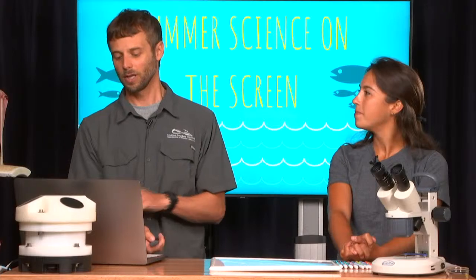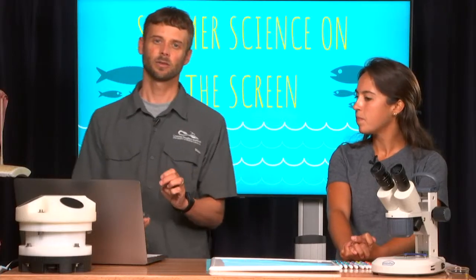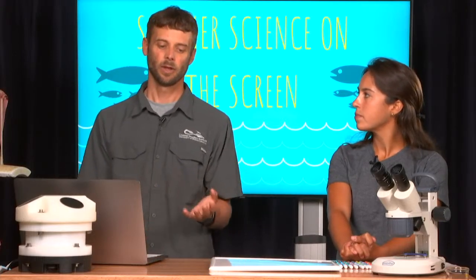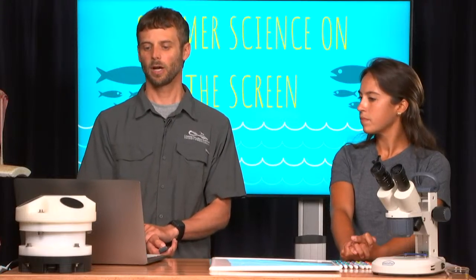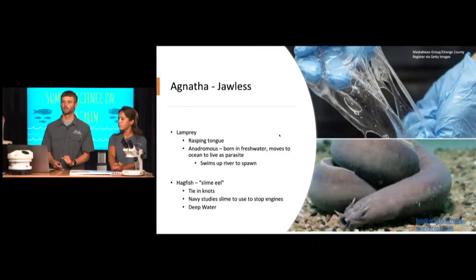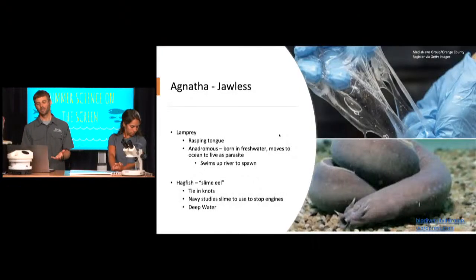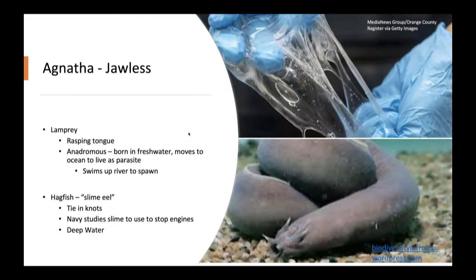Now we're going to focus on three classes of fish. The first class is called Agnatha — the jawless fish. We don't see them very frequently here, so we'll just talk about them briefly. It's the lamprey and the hagfish. The lamprey and the hagfish do not have jaws; they have rasping tongues — very rough tongues they can use to lick through things and get into their prey items.